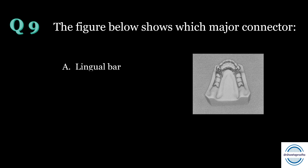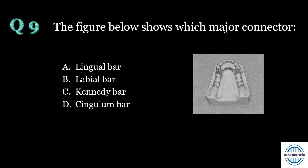Question number nine: the figure below shows which major connector? A. Lingual bar, B. Labial bar, C. Kennedy bar, D. Cingulum bar. The answer is C, Kennedy bar. It is actually a lingual bar with a cingulum bar — the upper bar is like a cingulum bar, the lower bar is like a lingual bar, connected with minor connectors. It is also called a double lingual bar or split bar, mainly used where there are wide interproximal spaces and a lingual plate cannot be used.